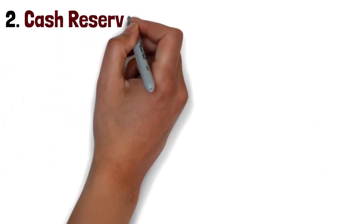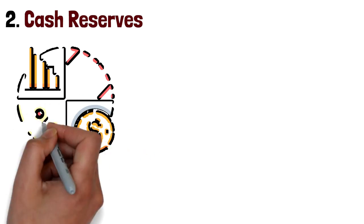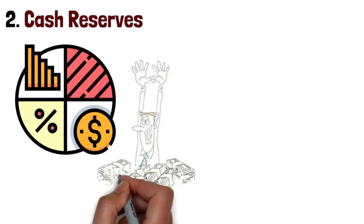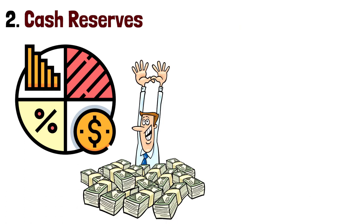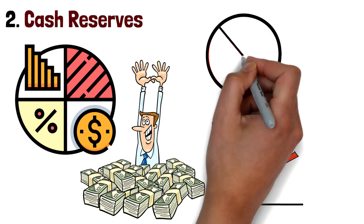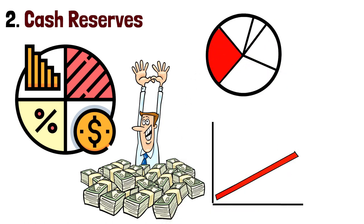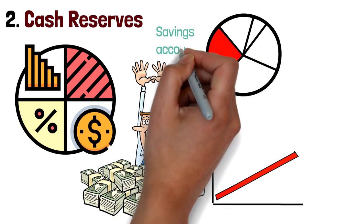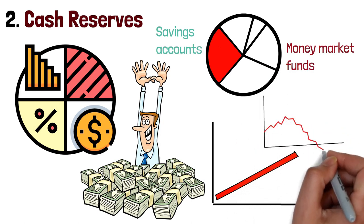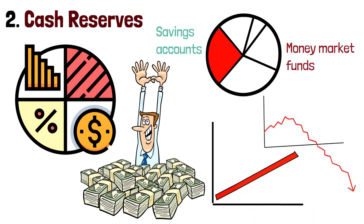Number two: cash reserves. Maintain a prudent allocation of cash reserves within your investment portfolio. Cash serves as a financial buffer, providing liquidity and flexibility to seize opportunities as they arise. Aim to hold a portion of your portfolio in cash equivalents such as savings accounts or money market funds to mitigate downside risk and capitalize on investment opportunities during market downturns.